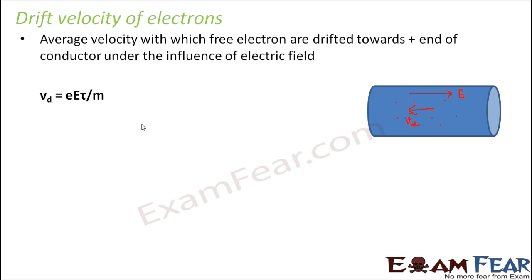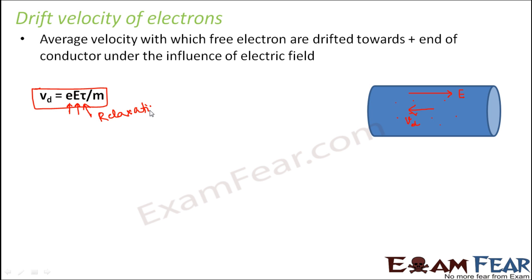How do we calculate drift velocity? Drift velocity of electrons is given by eEτ/m, where e is the charge on an electron, capital E is the applied electric field, tau (τ) is the relaxation time, and m is the mass of the electron.